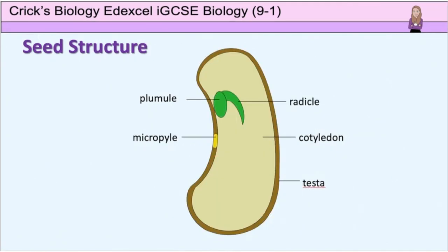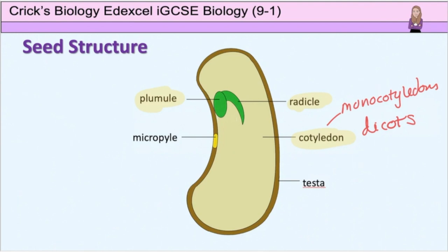The ovule now starts to develop into the seed. The zygote develops into the embryonic plant made up of a small root – the radicle – and the shoot – the plumule. There are seed leaves called cotyledons. Some seeds have one leaf, known as monocotyledons or monocots for short, and some have two leaves, known as dicots. The seed also contains a food store, either in the cotyledons or in another part of the seed, ready for when the plant starts to germinate. The ovule wall develops into the seed coat or testa. The fruit usually develops from the ovary wall but may also develop from other parts of the flower.